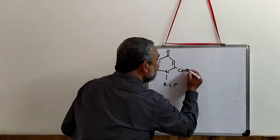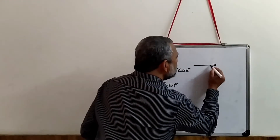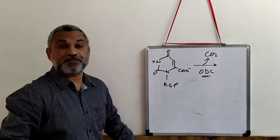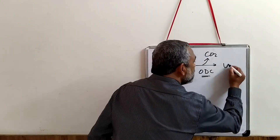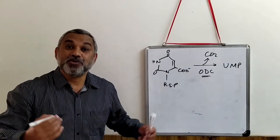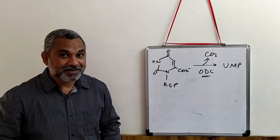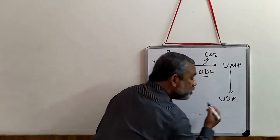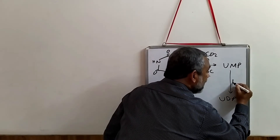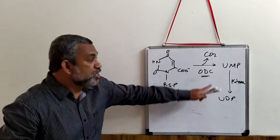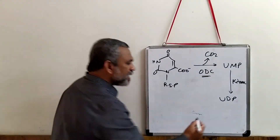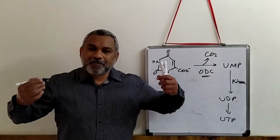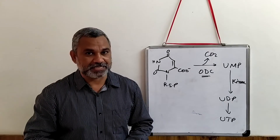Once you have orotate monophosphate, CO2 is removed by orotate decarboxylase, giving rise to UMP — uridine monophosphate. UMP can then be converted to UDP, and UDP can be further converted to UTP by nucleotide kinase enzyme. This is how the UTP molecule is synthesized.